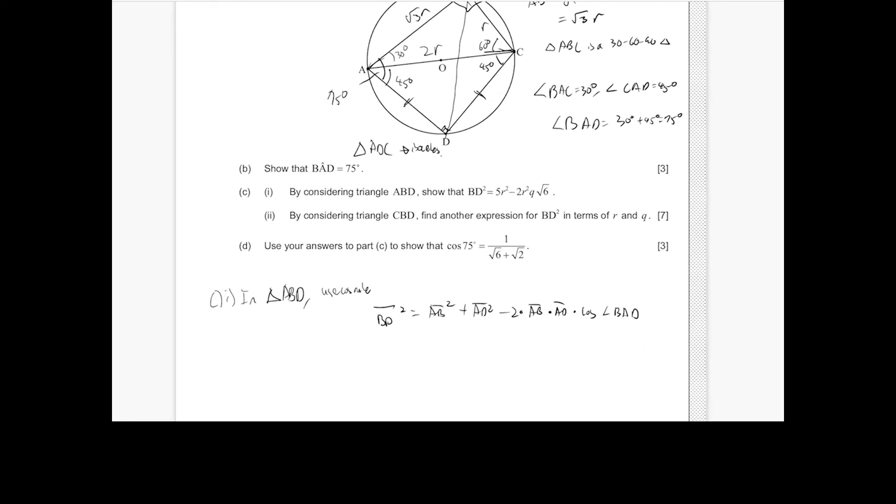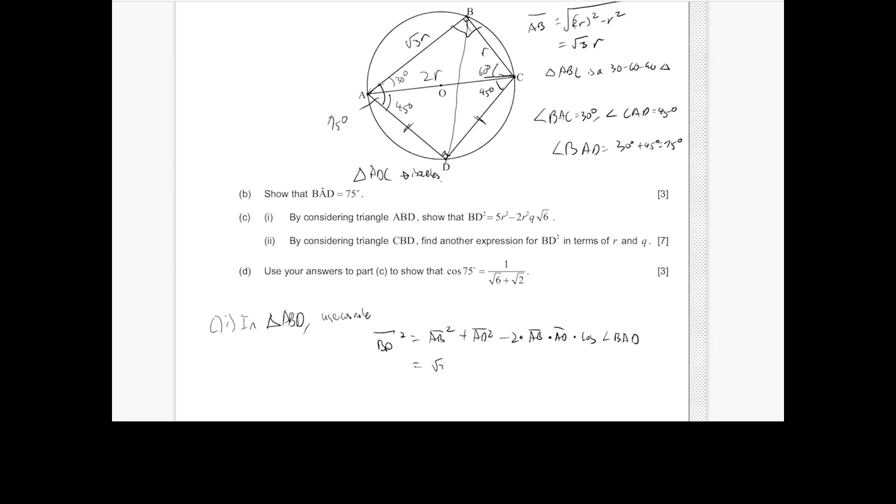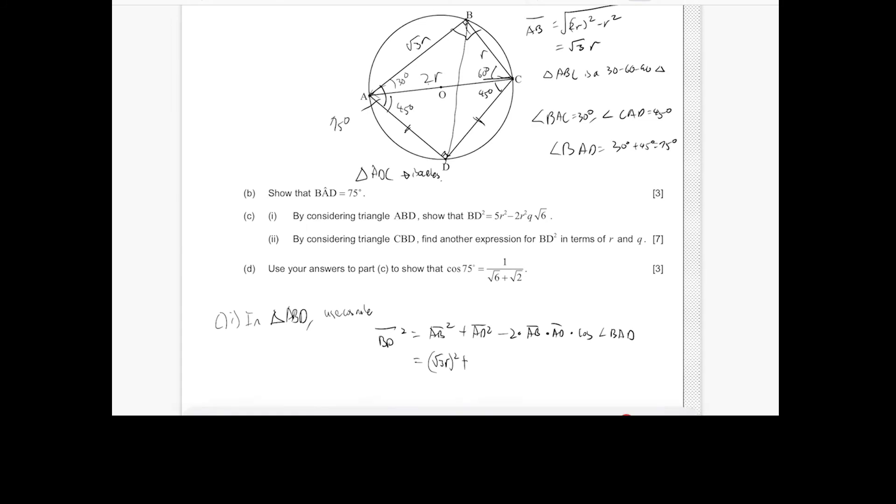So using substitutions, based on what we know, we know AB is going to be root 3R, so root 3R squared plus... So if you want to find the length of side AD, we know that AD squared plus DC squared is going to give 2R squared. So since AD is equal to DC, we know that 2AD squared is going to equal 4R squared. So AD is going to be root 2R.